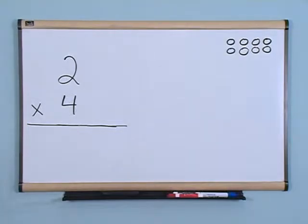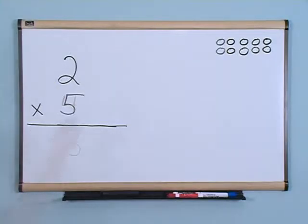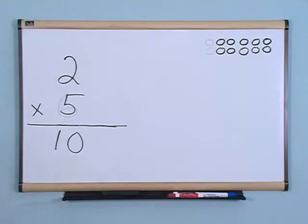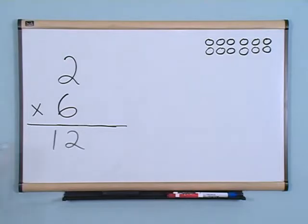2 times 4 is 8. 2 times 5 is 10. Two times six is twelve.